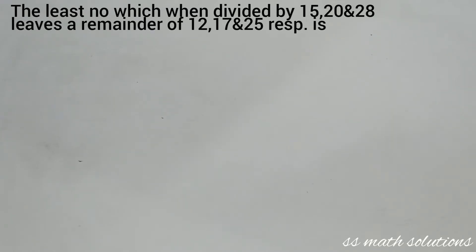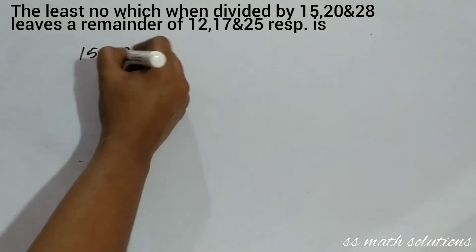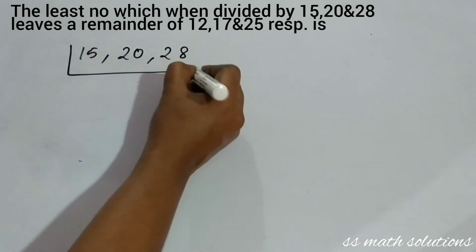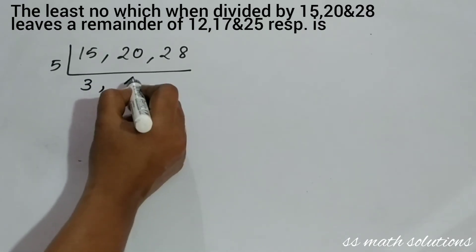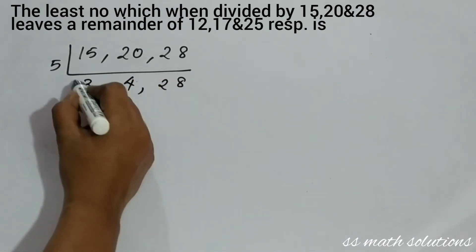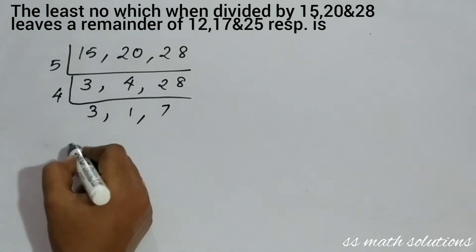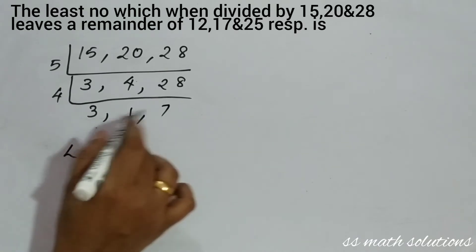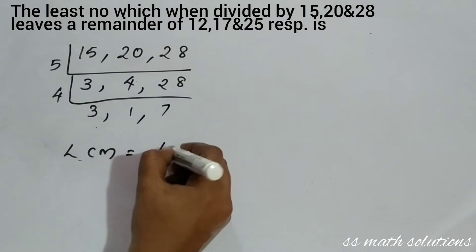When we need to find the least number, we take the LCM. So we find the LCM of 15, 20, and 28. Dividing by 5: we get 3, 4, 28. Then dividing by 4: we get 3, 1, 7. So LCM = 5 × 4 × 3 × 7 = 420.